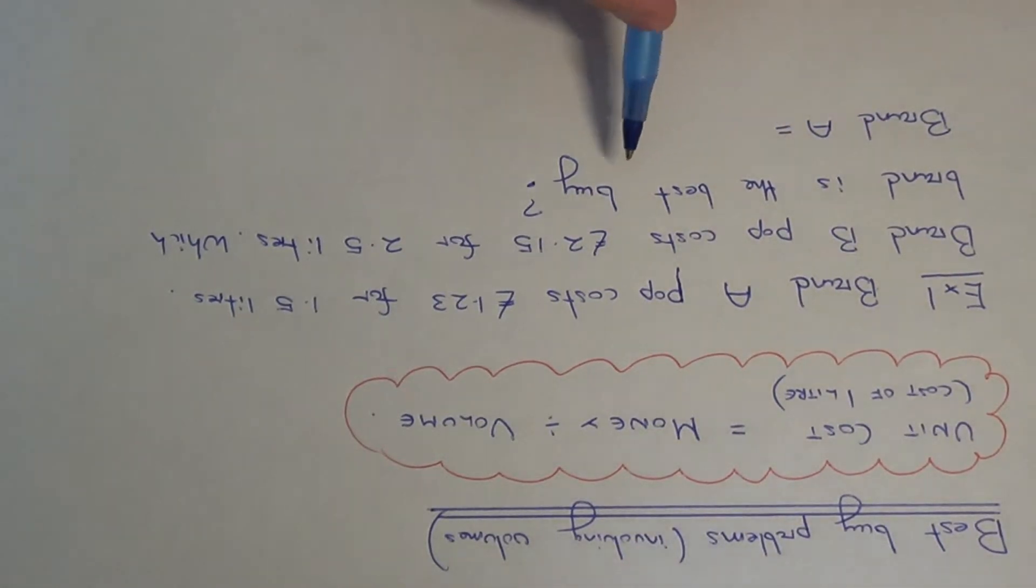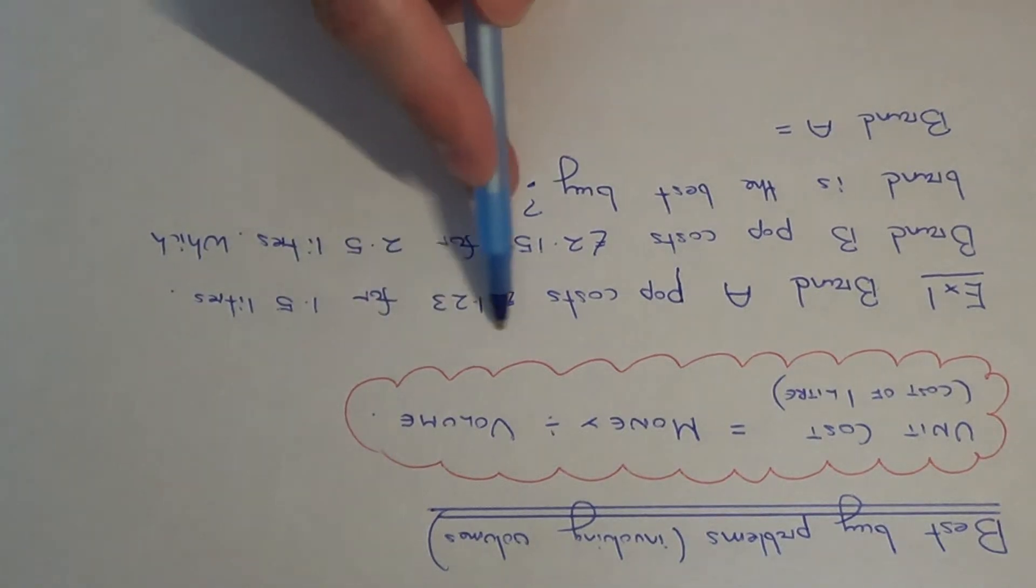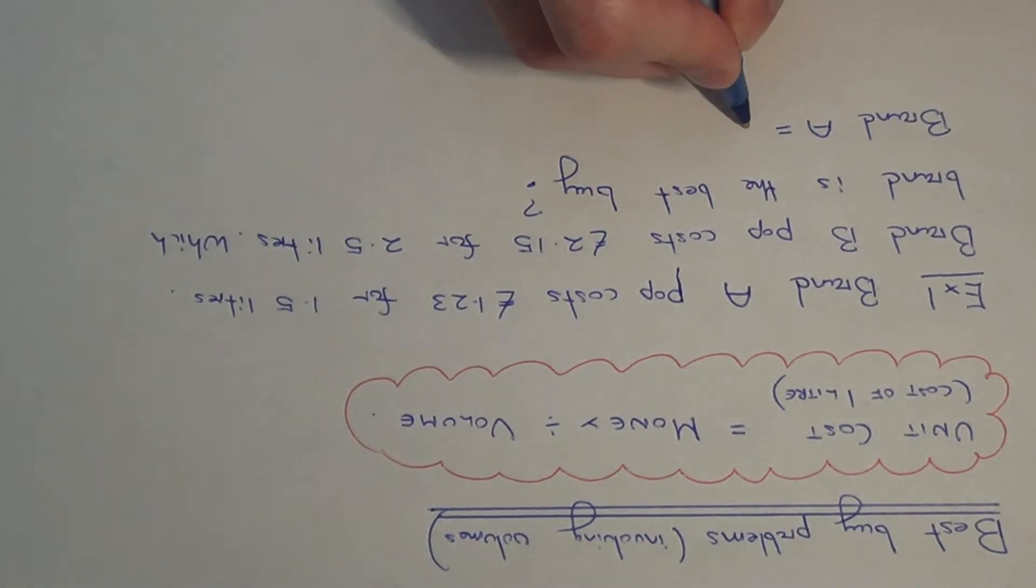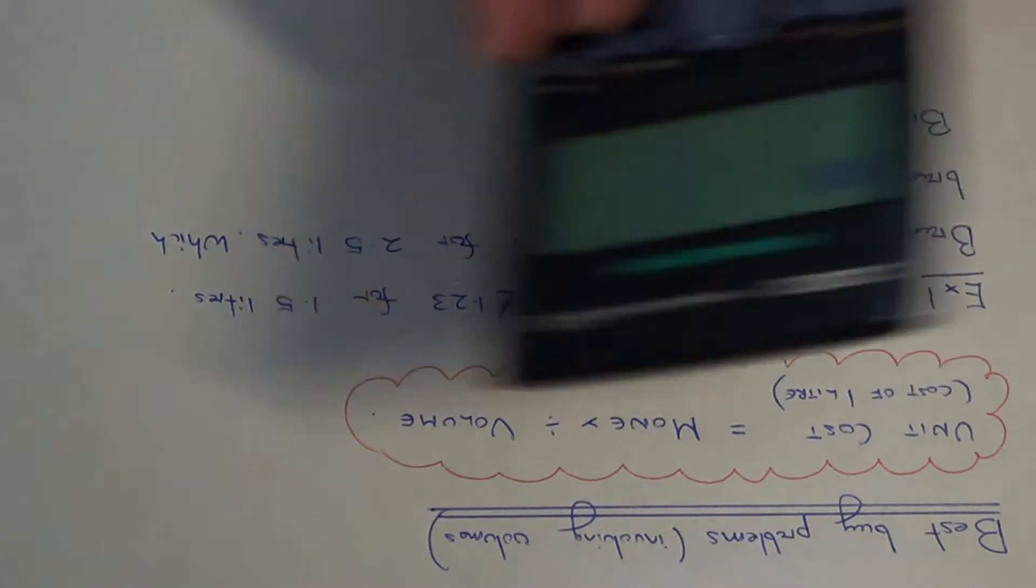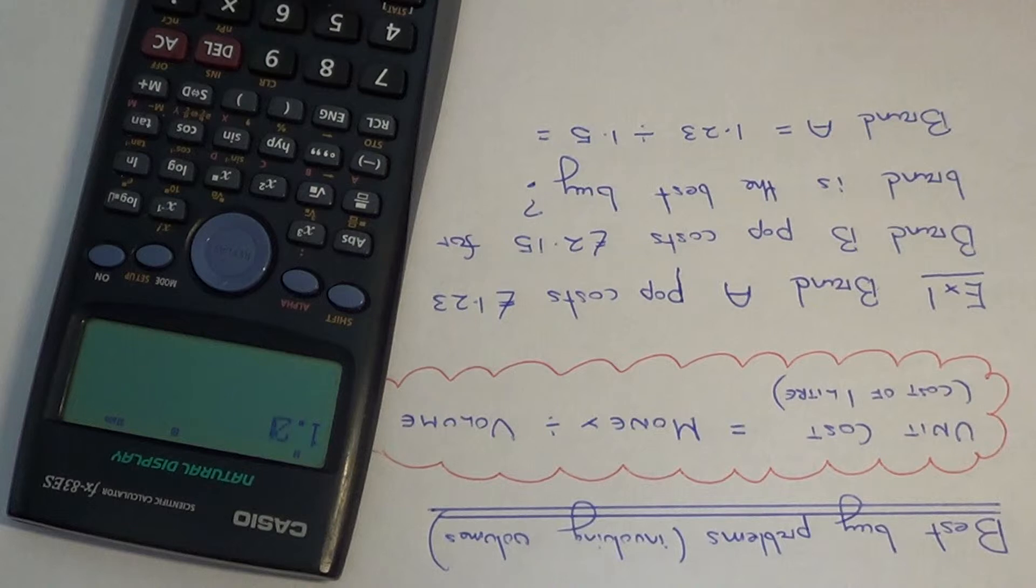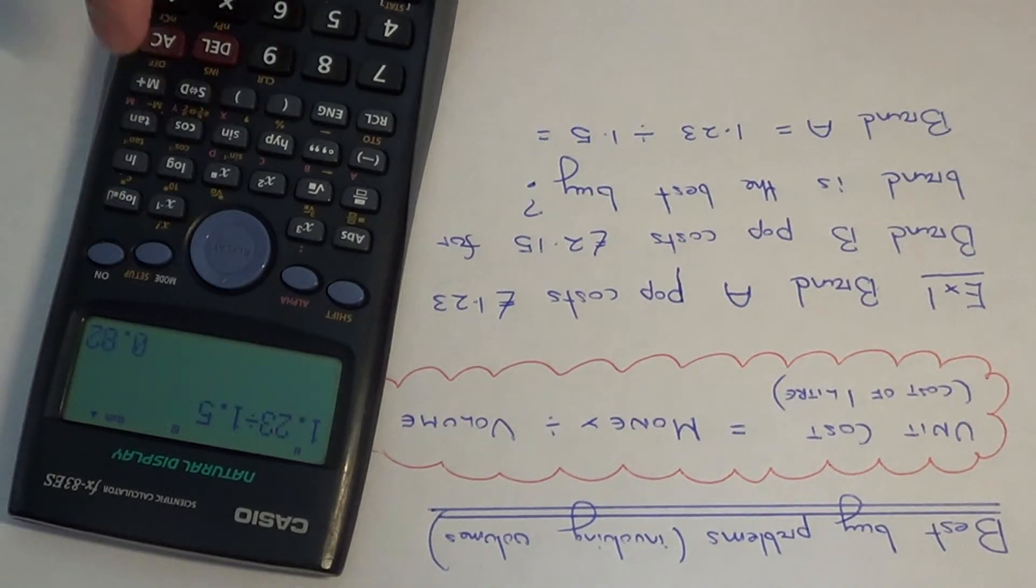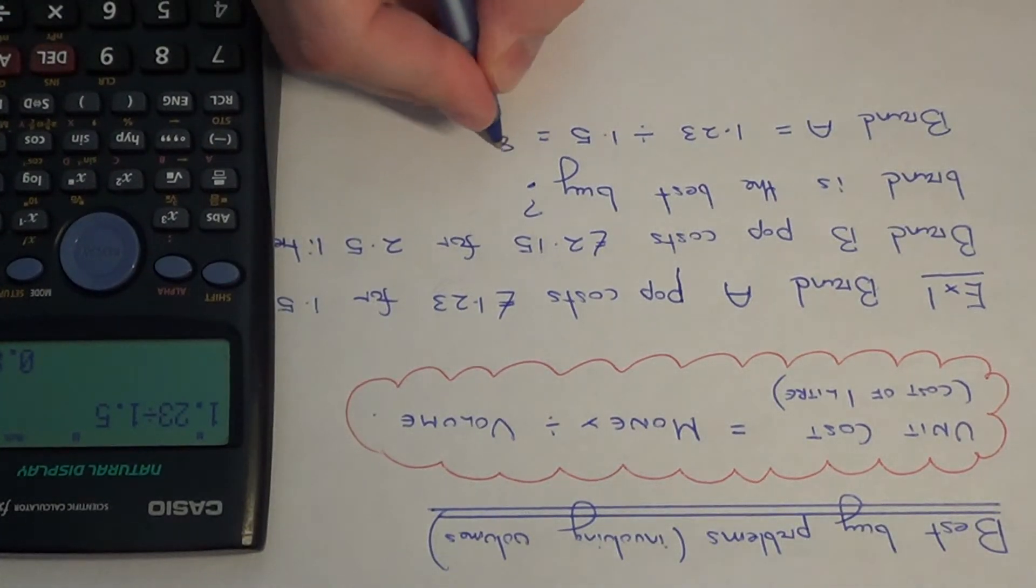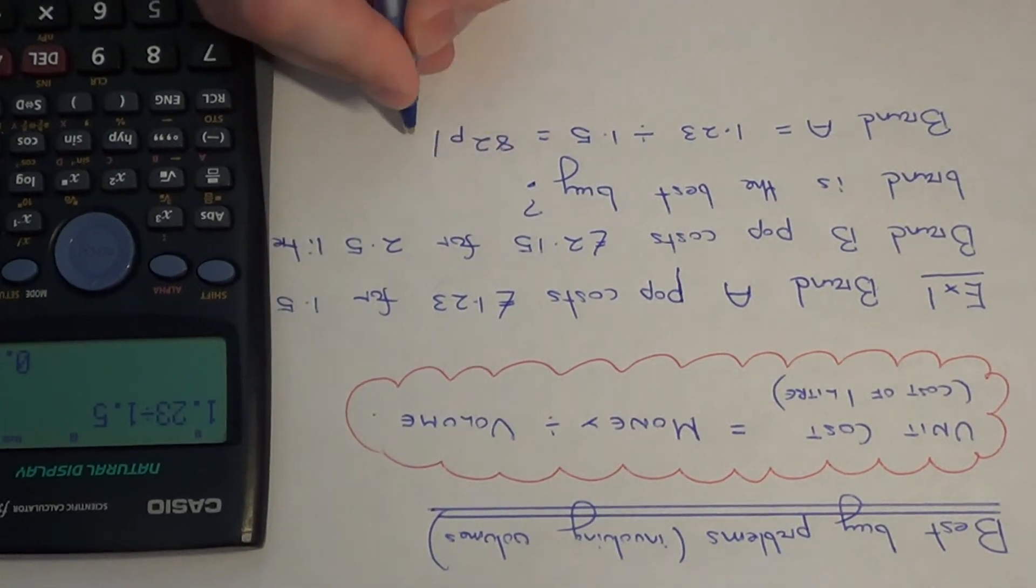For Brand A we're buying £1.23 and that's for 1.5 litres. We divide the cost by the volume. Just put that in your calculator: 1.23 divided by 1.5. That comes out as 82 pence, so it's 82p per litre.